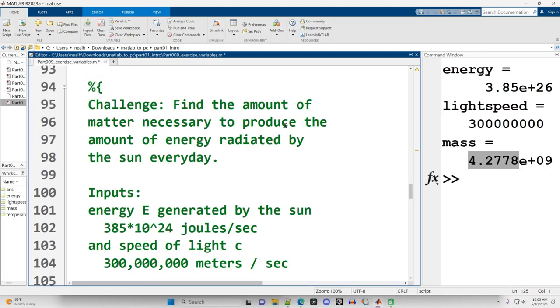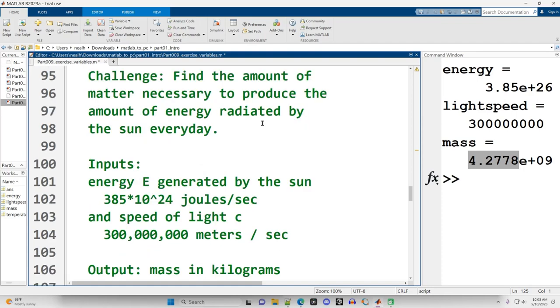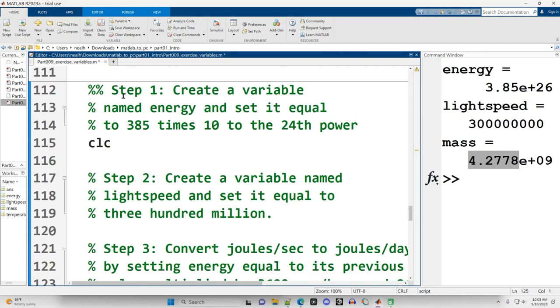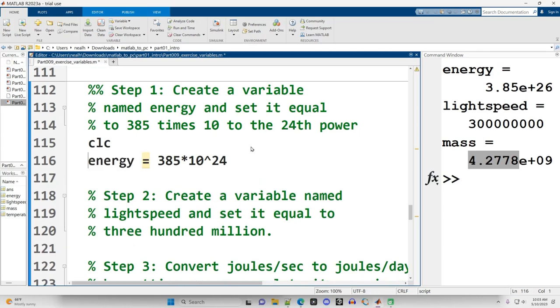Challenge. Find the amount of matter necessary to produce the amount of energy radiated by the sun every day. This is the information we're given. Step one. Create a variable named energy and set it equal to 385 times 10 to the 24th power. So energy equals 385 times 10 to the 24th power. I strongly encourage you to use the variable name energy rather than e because e could stand for a lot of different things. We want to make our code easy to read and that means using variable names that are words that we can read and understand some of what the context is.